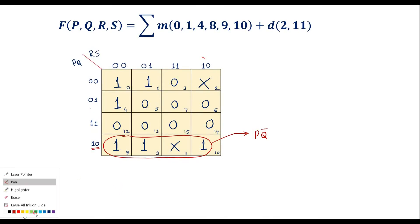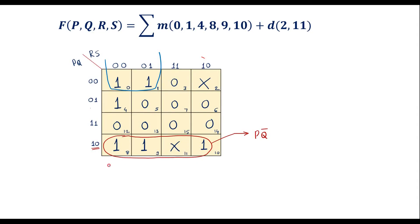Now here we can see that these two 1s and these other two 1s together can make a quad. I will use these two 1s and these two 1s together to form one quad. It covers these two columns — the common term across these columns is 0, which with respect to R is R bar. It also covers these two rows, where the common term is 0 with respect to Q, giving Q bar. So one term is R bar Q bar.